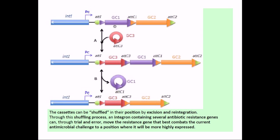For example, at the very beginning gc1 codes for a resistance gene, but it is no longer required because a new antibiotic is provided and the bacteria is going to die. So they shuffle the gc elements and finally incorporate gc3, which contains the genetic element coding for antibiotic resistance against the new antibiotic. Once gc3 is placed there, it will be expressed faster, the molecule will act against the antibiotic, and the bacteria will survive for a longer period of time.